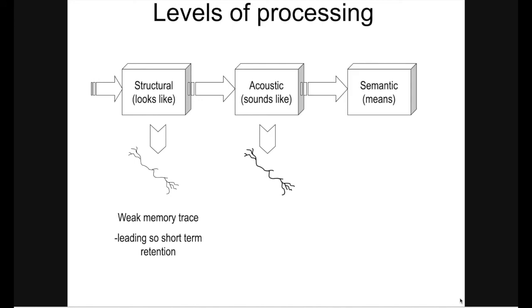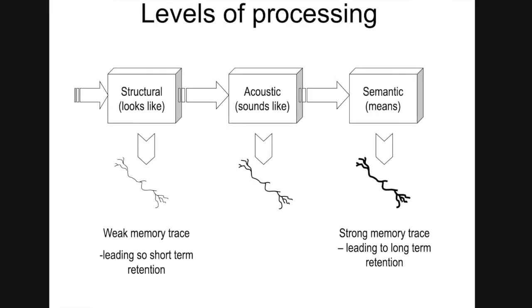On the other hand, deep processing involves semantic processing of the incoming information. This means that our brain encodes the meaning of the stimulus, which in turn can link it to previously stored knowledge in our brain, leading to stronger, more persistent traces and better retention.